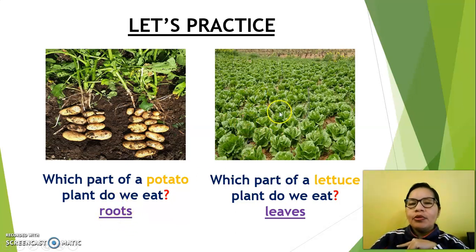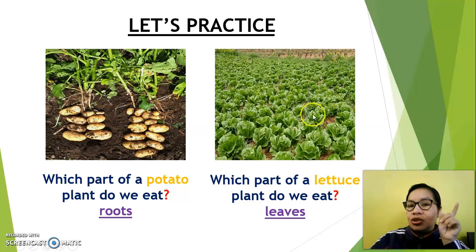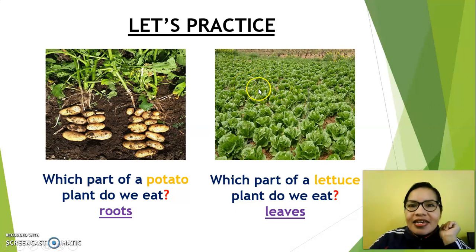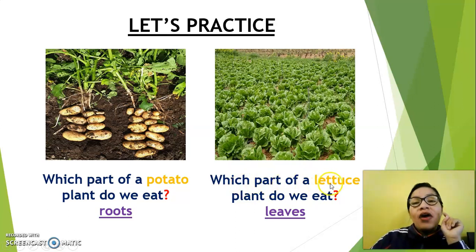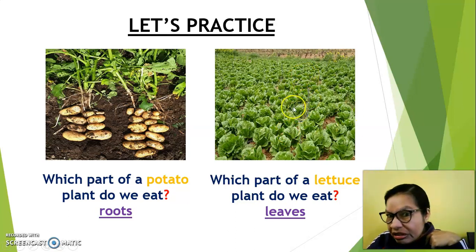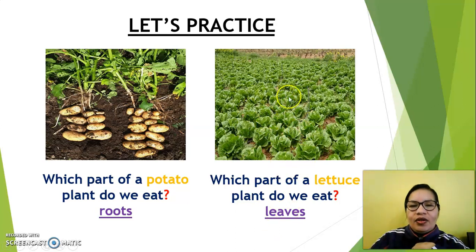Another example. Look at this — what is it? A lot of lettuce. Yes, lettuce. When you eat some salad, you eat a lot of lettuce. What color is the lettuce? Green. Yes. Listen to the question: which part of a lettuce plant do we eat? We eat roots? No. We eat fruit? No. Leaves — we eat leaves.